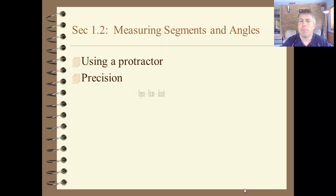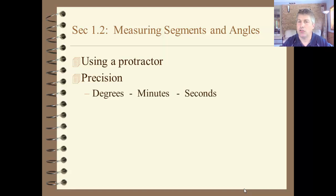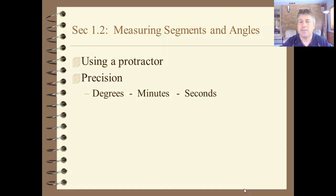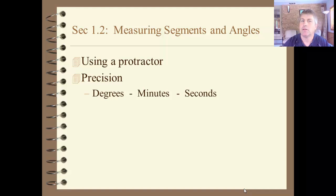Angles can be measured in degrees, minutes, and seconds. 60 seconds — the smallest unit of measurement we have — makes up one minute. 60 minutes then makes up one degree.